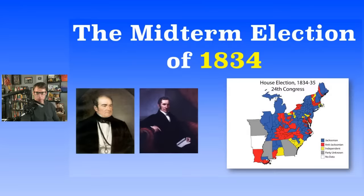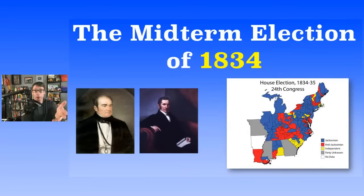By 1834, Democrats were trying to hold on with the emergence of a new political party that would be a major force for the next 15–20 years — the Whig Party. They originate their name from back in Britain. I do have a video about the Whig Party. Most of the people making up the Whig Party were simply people that were against Andrew Jackson.